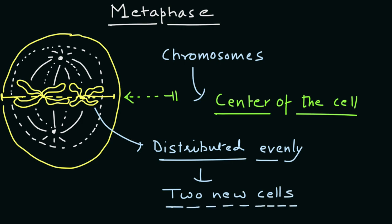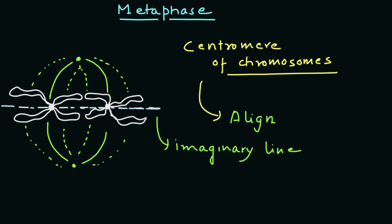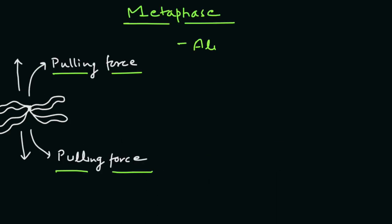During metaphase, the centromeres of chromosomes line themselves on the metaphase plate, which is an imaginary line that is equidistant from the two centrosome poles. This even alignment occurs as a result of the counterbalance of the pulling forces generated by the opposing kinetochore microtubules.